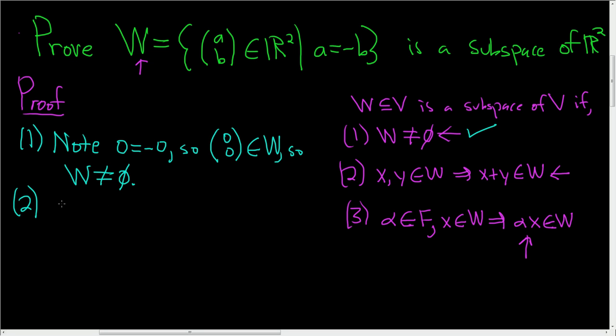Two. Here we have to show it's closed under vector addition. So to show condition two, we have to start by supposing we have two vectors X, Y in W. So suppose X, Y are in W.